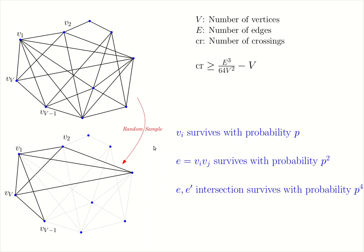If you look at this picture, you will see the following observations. First of all, a vertex survives with probability p. This is the premise we begin with. For an edge to survive in the sample graph, both endpoints of that edge must be sampled. This edge does not survive because this vertex has not been sampled. However, edge v1, v2 survives because both v1 and v2 have been sampled.